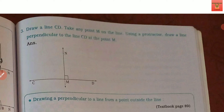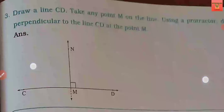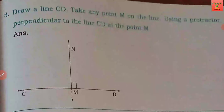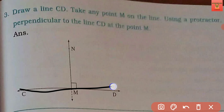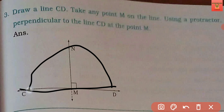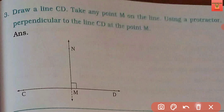Second question देखो — आपको फिर perpendicular line बनाना है, इस बार protractor use करके। So आप फिर से वैसे ही करोगे — पहले base line बना लोगे, फिर point M बनाके protractor place करना है, 90 degrees को mark करके बस line बना देनी है।